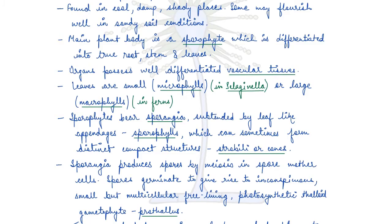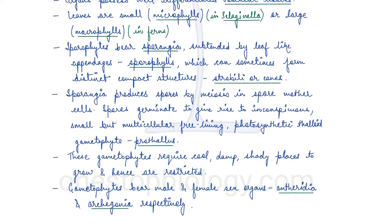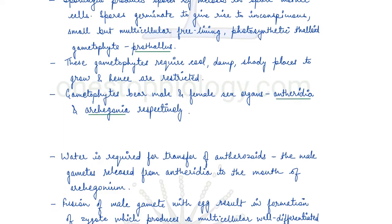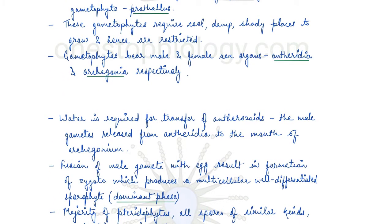The sporangia are subtended by leaf-like appendages known as sporophylls, which can sometimes form distinct compact structures known as strobili or cones. These sporangia produce spores by meiosis in the spore mother cells, and these spores germinate to give rise to small but multicellular free-living gametophytes, known as prothallus, which is a free-living photosynthetic thalloid. These gametophytes require cool, damp and shady places to grow and hence are restricted.